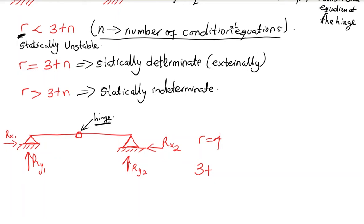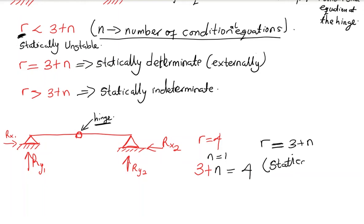At this hinge we can write one more equation, so n becomes equal to one. We have three plus n equals four, so r equals three plus n. Hence, this structure is called statically determinate.